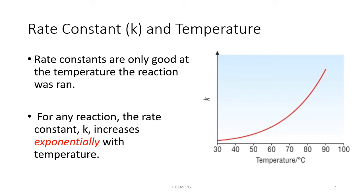The rate constant is also related to the temperature of a reaction. Rate constants are only constant at a specific temperature, so if you run a reaction at any different temperature, you have to recalculate the new rate constant. A small value for K corresponds to a slow reaction, while a large value for K corresponds to a fast reaction. Since slower reactions take place at lower temperatures, they're also going to correspond to lower values for the rate constant. And faster reactions take place at higher temperatures, so they're going to correspond to larger values for the rate constant.